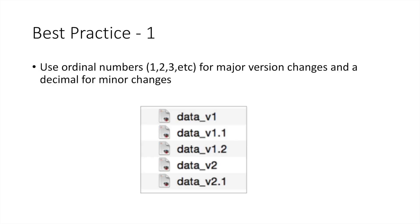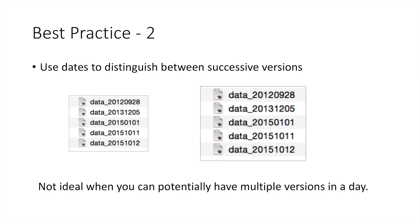Best practice one: use ordinal numbers for major version changes and a decimal for minor changes. Best practice two: use this format to distinguish between successive versions. You can also use the date created — year, month, day — to name your data. These two practices are commonly used to name research data files, especially for research involving experiments.